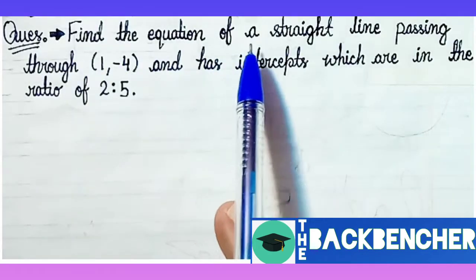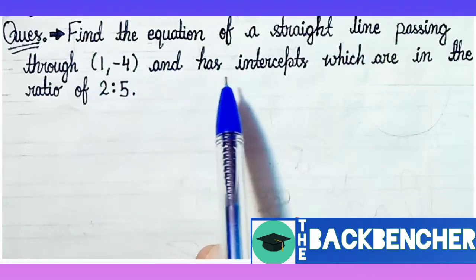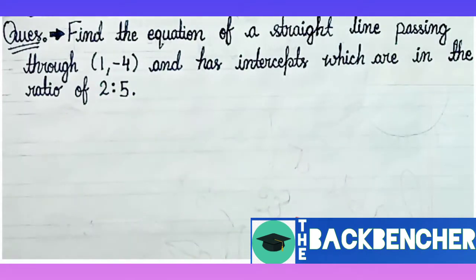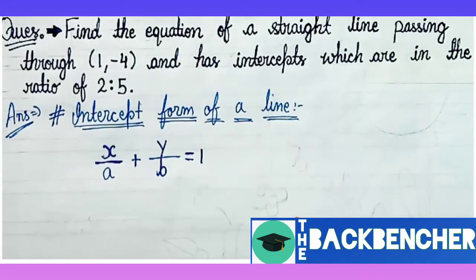The question is: find the equation of a straight line passing through (1, -4) and has intercepts which are in the ratio of 2:5. We have an equation of a straight line which passes through point (1, -4) and it has the intercept ratio of 2:5.